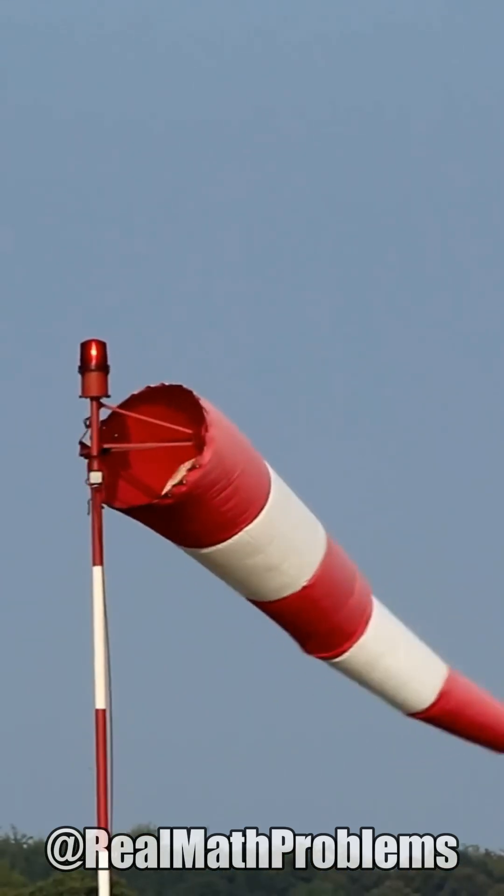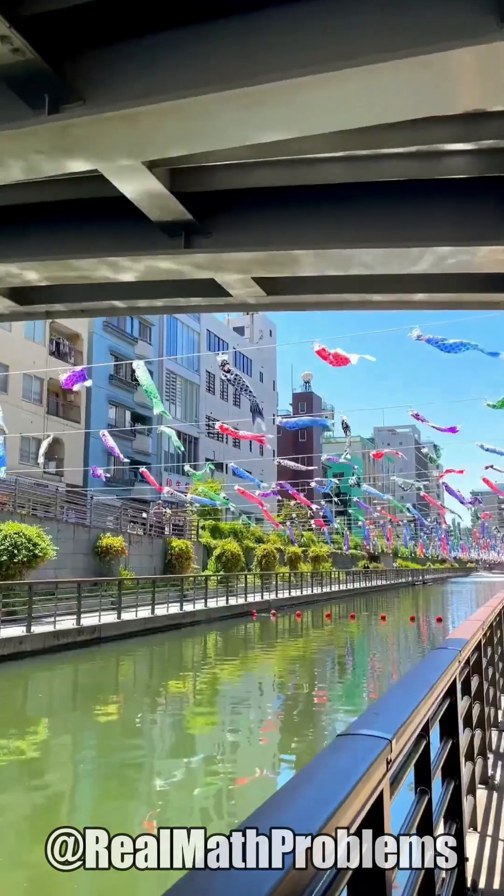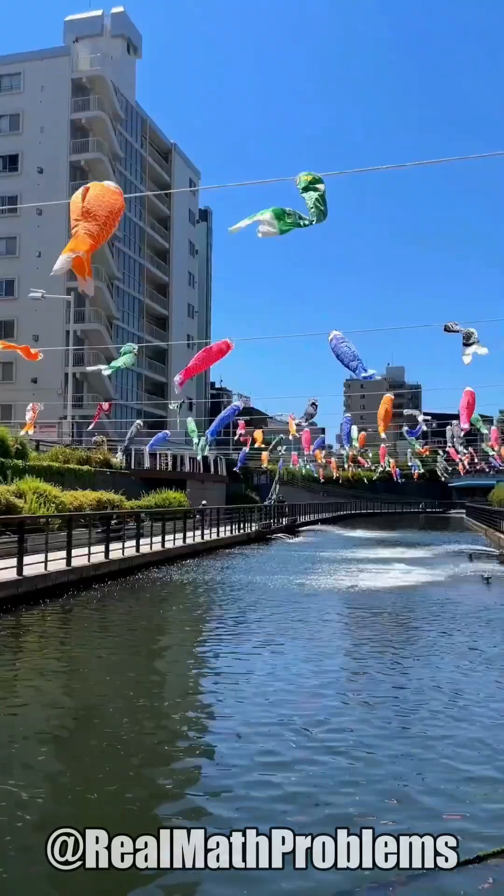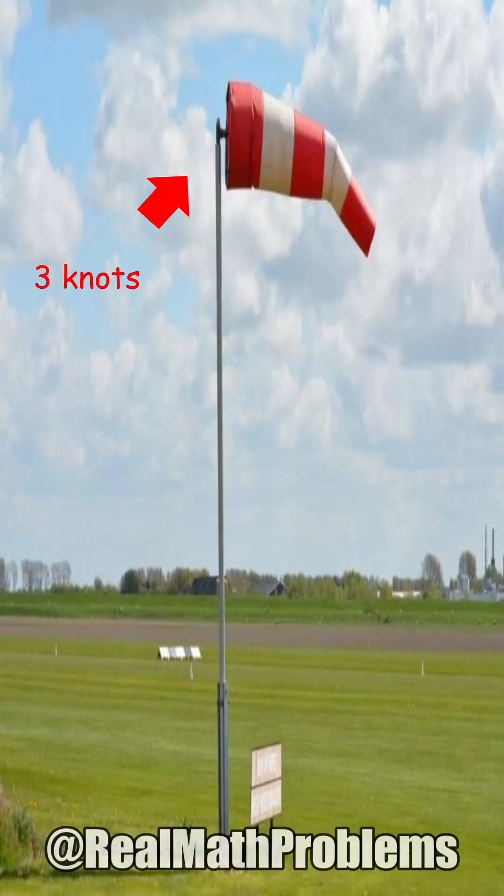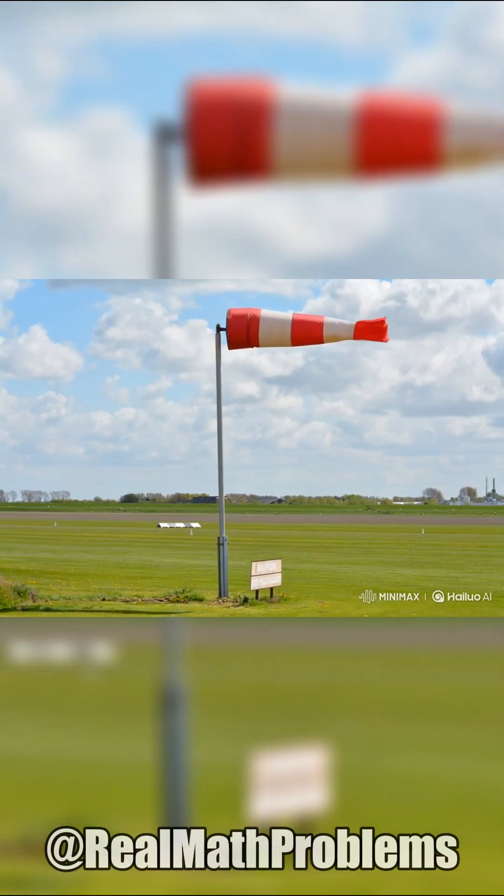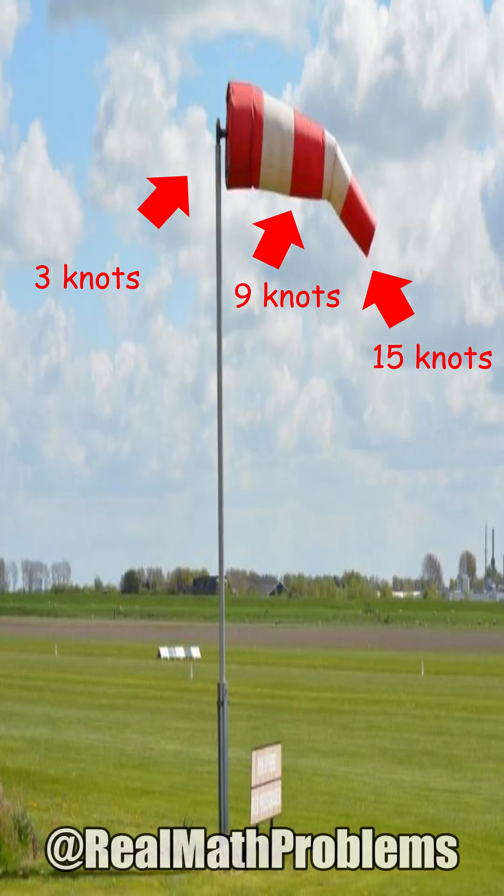How a windsock works. A windsock, or koinobori in Japan, is a conical textile tube that resembles a giant sock. It can be used as a basic indicator of wind speed and direction, often with three stripes to indicate speed. But how can it do that?